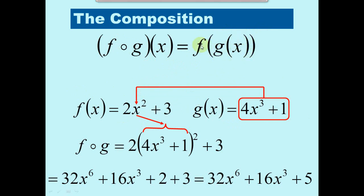Since g of x goes into f, we take whatever g of x is and replace the x in the f function. So 2x squared plus 3 — wherever there is an x we put g of x in there. Instead of having x we have 4x cubed plus 1, we square that because it was x squared, then multiply by 2 and add 3. When you expand this and add like terms, 2 plus 3 gives 5, which is how you get the final answer.